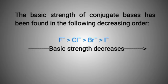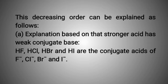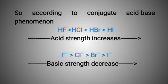The basic strength of conjugate bases decreases from fluoride ion to iodide ion. Explanation A: based on the principle that a stronger acid has a weaker conjugate base. Hydrogen fluoride, hydrogen chloride, hydrogen bromide, and hydrogen iodide are the conjugate acids of fluoride ion, chloride ion, bromide ion, and iodide ion. According to the conjugate acid-base phenomenon, acidic strength increases from hydrogen fluoride to hydrogen iodide. Thus, the basicity of conjugate bases decreases from fluoride ion to iodide ion.